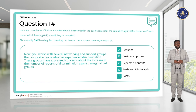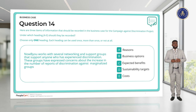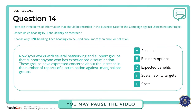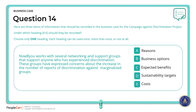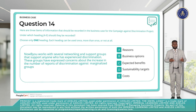Question 14. Now Be You works with several networking and support groups that support anyone who has experienced discrimination. These groups have expressed concern about the increase in the number of reports of discrimination against marginalised groups. Under what heading would we put this? This is the Reason — it is one of the justifications for why the project was started. Answer A is correct.